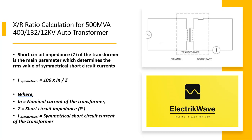Short circuit impedance Z of the transformer is the main parameter which determines the RMS value of symmetrical short circuit currents. In the mentioned formula, IN equals nominal current of the transformer, Z equals short circuit impedance, and I_symmetrical equals symmetrical short circuit current of the transformer.